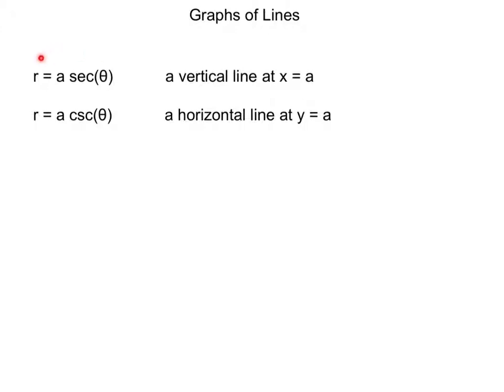If you have r equals a times secant theta, it's a vertical line at x equals a. And if you have r equals a times cosecant theta, it's a horizontal line at y equals a. There's actually a lot of reasoning for that. If you take this thing and just think for a minute, r equals a secant theta is the same as r times 1 over cosine theta.